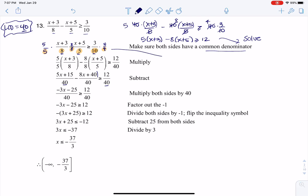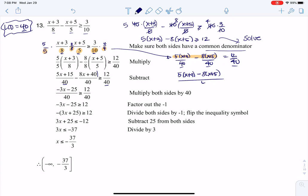So let me just do a sidestep here so that we can see what's happening. I have 5 times x plus 3 over 40, minus 8 times x plus 5 over 40, equaling 12 over 40. And then because these are common denominators, I can just clump the numerators together. So if I clump the numerators together, I'm looking at 5 times x plus 3 minus 8 times x plus 5, all over 40, is greater than or equal to 12.